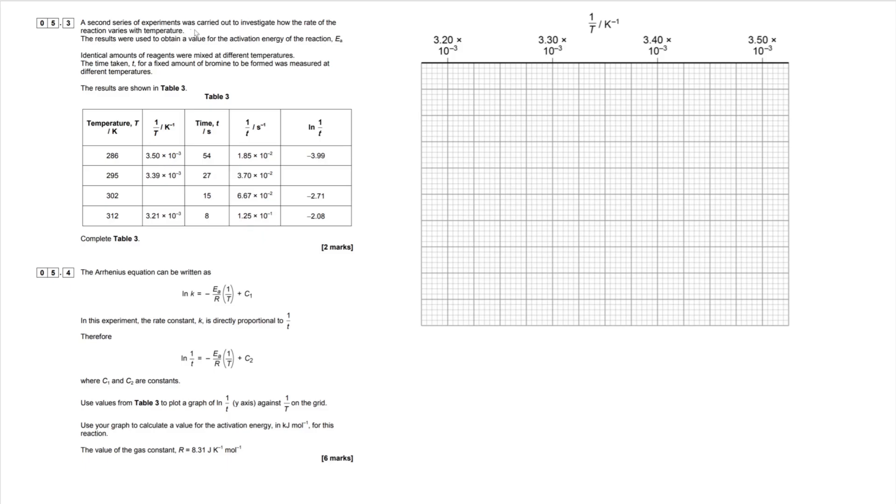So a second series of experiments was carried out to investigate how the rate of the reaction varies with temperature. This is carrying on from a previous question. I actually did that one in a separate video. But essentially, the rate constant K will change with temperature. So identical amounts of reagents were mixed at different temperatures. The time taken T for a fixed amount of bromine to be formed was measured at different temperatures. The results are shown in table 3. So we have a nice data table here.